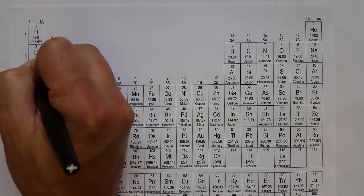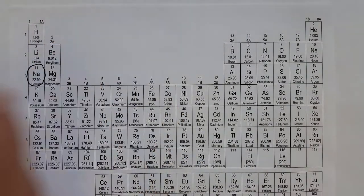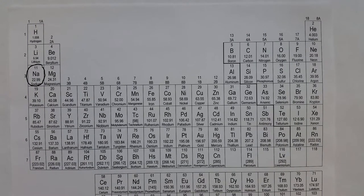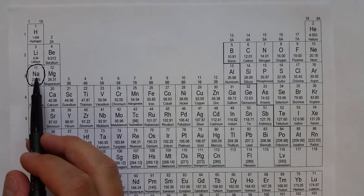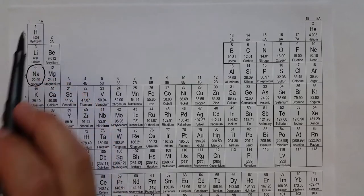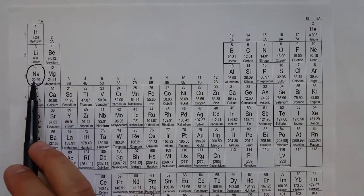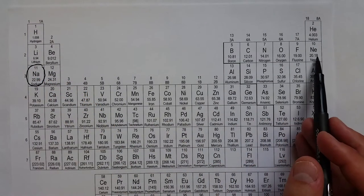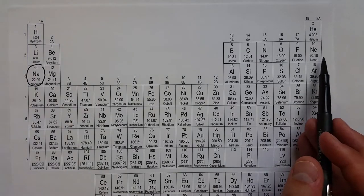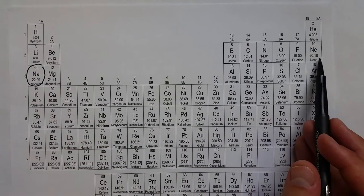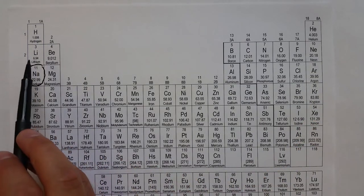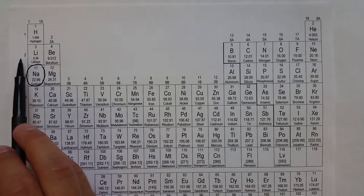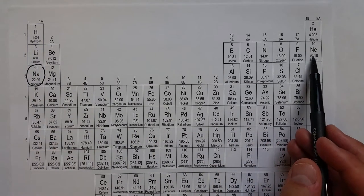Sodium likes to form a plus one ion because it has one valence electron — it's in group 1A. If it loses that one valence electron, it will have 10 electrons total and 8 valence electrons, just like neon — 8 valence electrons in the n equals 2 energy level.